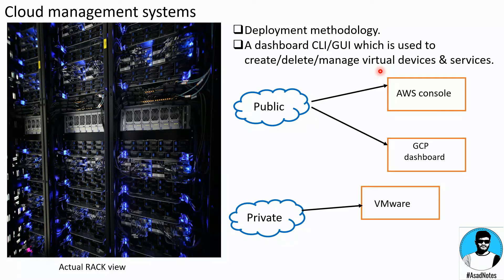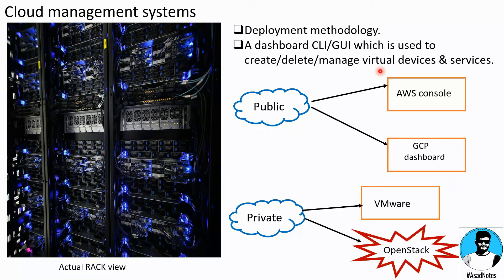In private cloud, you have only two main options for your CMS: first is VMware and the other one is OpenStack. Generally people say that they have a VMware cloud or OpenStack cloud, but that is not technically true — it is not the cloud itself. VMware and OpenStack are actually the cloud management systems for the cloud.